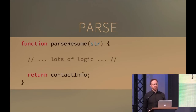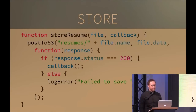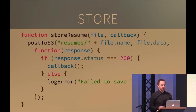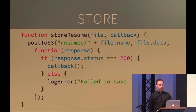Let's look at potential implementations. Here's one way to implement parse: a function `parseResume` takes in a string, does stuff, returns contact info. Now let's look at the effectful side — the portion that saves the resume on Amazon S3. `storeResume` takes in a file object and a callback. We call `postS3` passing a path in the resumes folder plus `file.name`, the raw binary data, and a callback. If `response.status` is 200 — success, we call our callback. Otherwise we log an error.